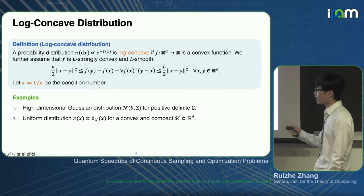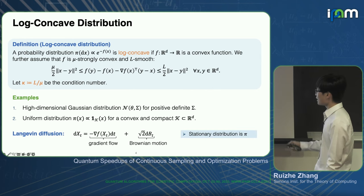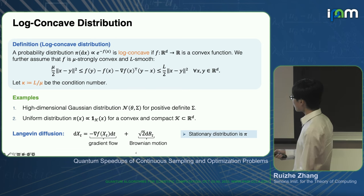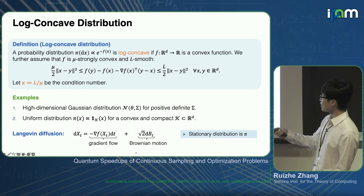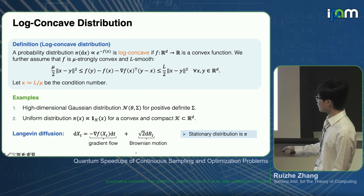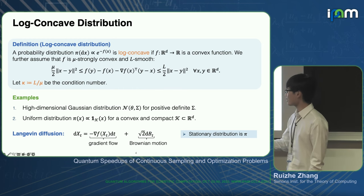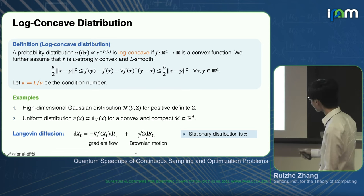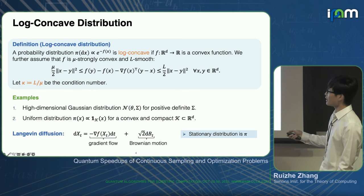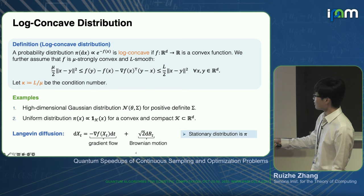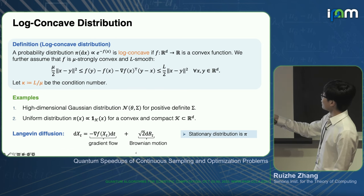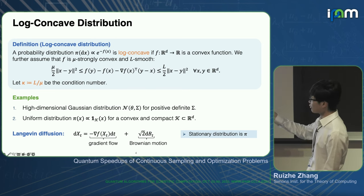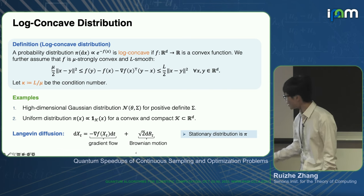A fundamental approach to log-concave sampling is the Langevin diffusion stochastic differential equation. It has two terms: the first corresponds to the gradient flow, and the second is Brownian motion. The gradient flow term explains the strong connection between sampling and optimization. An important property of the Langevin diffusion is that its stationary distribution is exactly the target distribution pi proportional to e to the minus f of x. So if we want to sample from this target distribution, we just need to simulate this SDE.